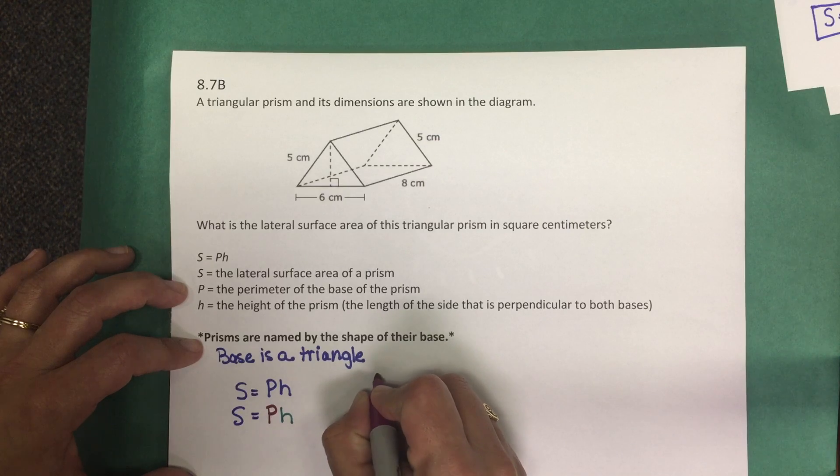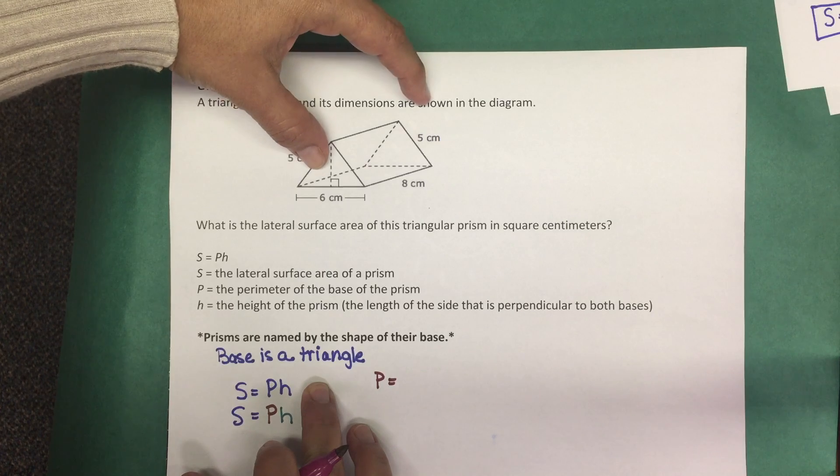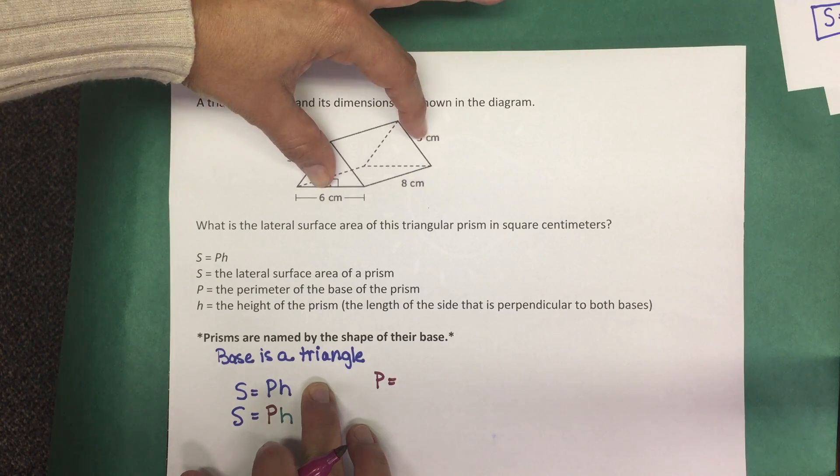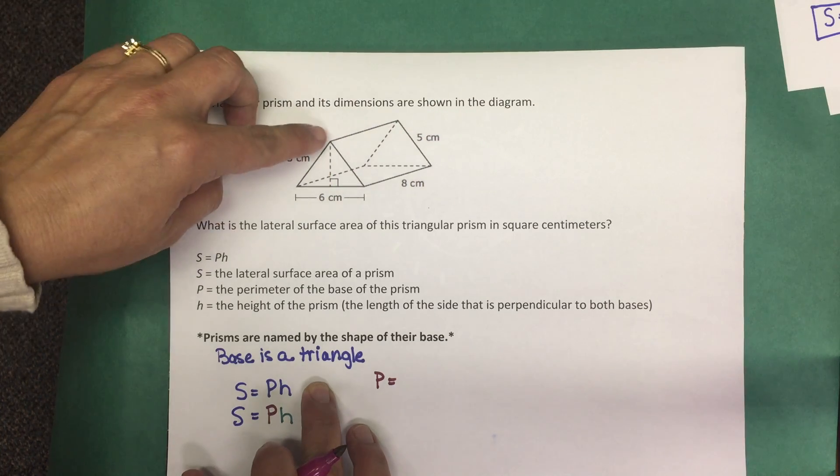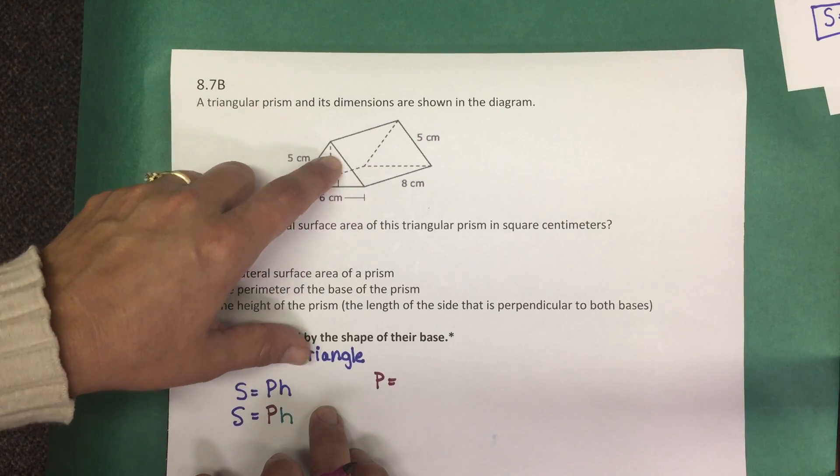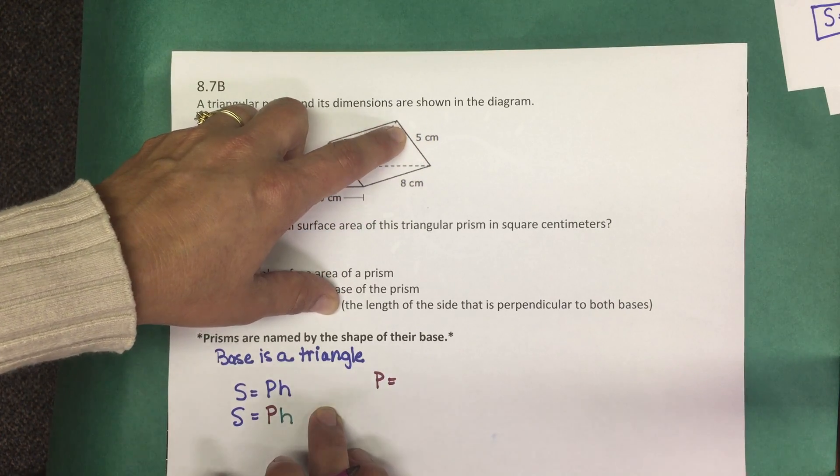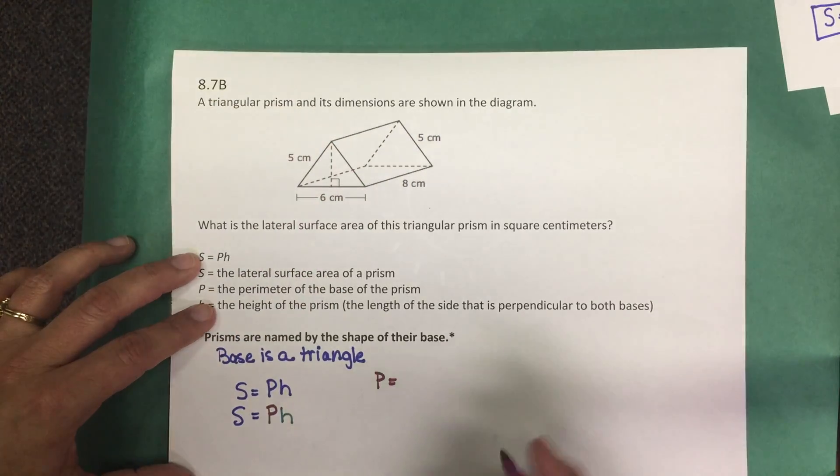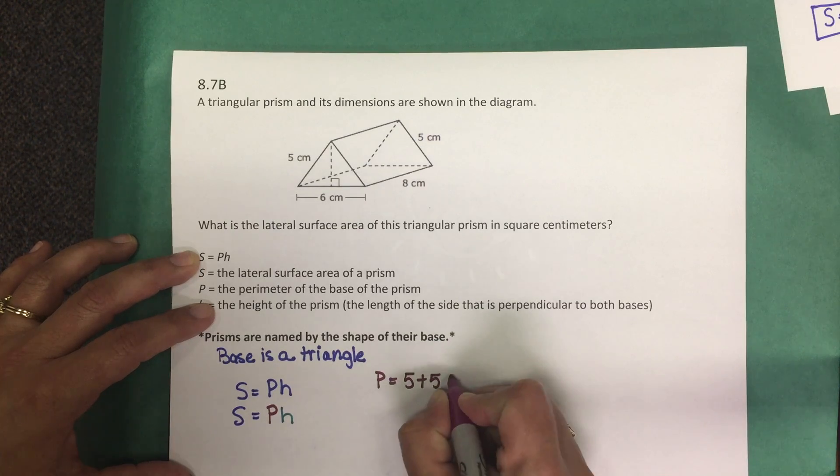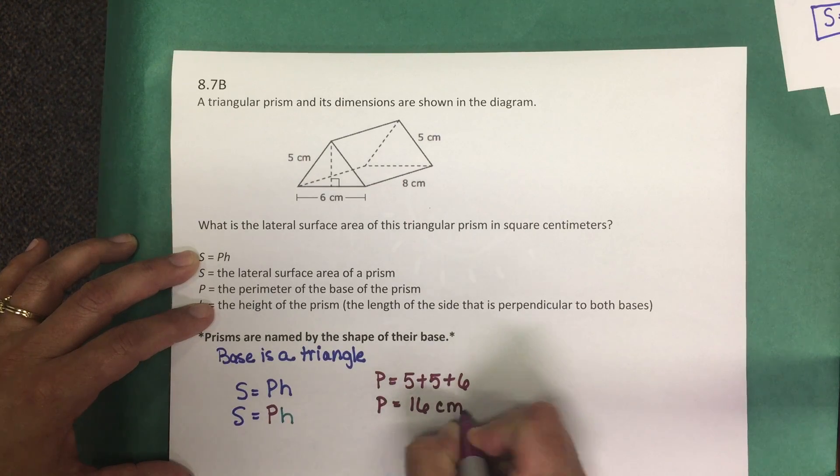For the perimeter of the base, now we know that the base is a triangle. If we look at the prism, you see we do have triangles that are congruent and they're opposite faces of each other. We have a side of 5 labeled, a side of 6 labeled. This side is not labeled, but when we look here at the opposite base we see that side is labeled as 5, which means that this side here will be 5. So the perimeter of the base is 5 plus 5 plus 6, which is 16 centimeters.